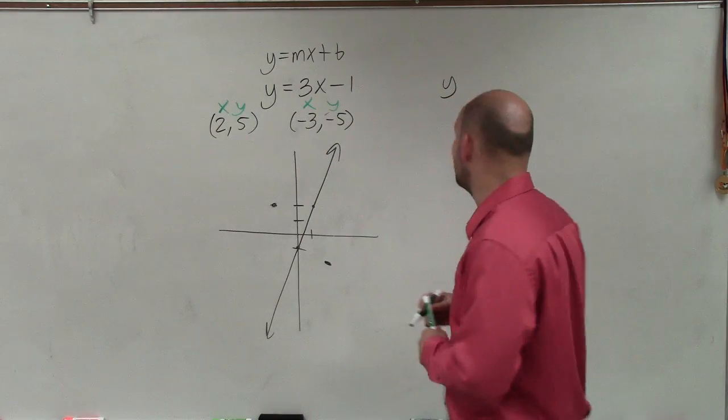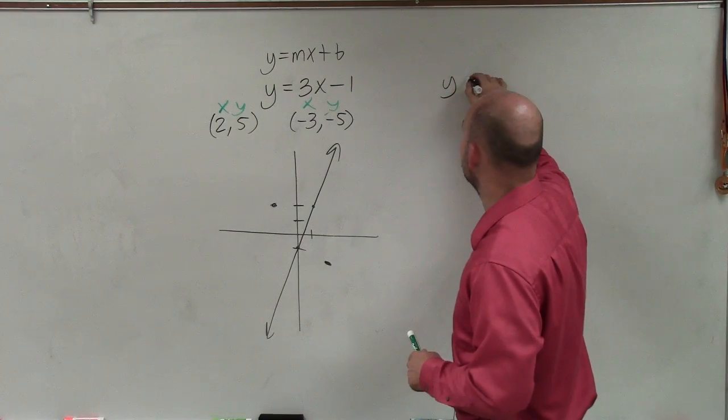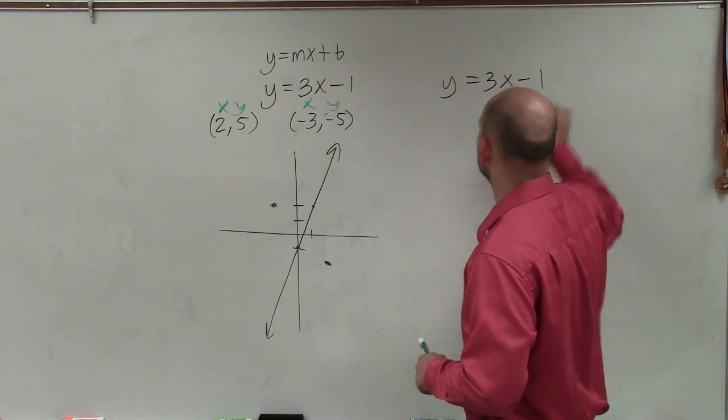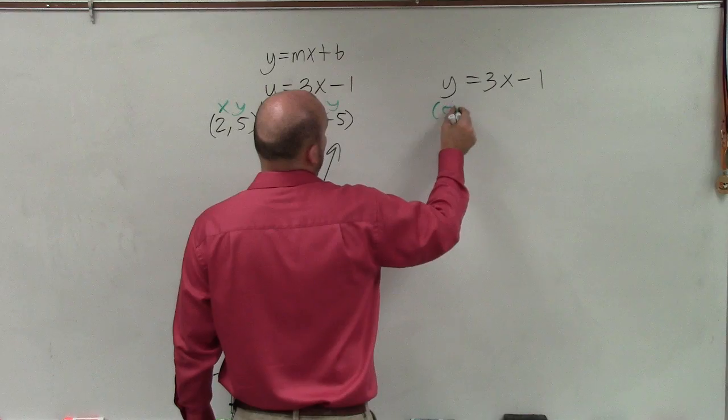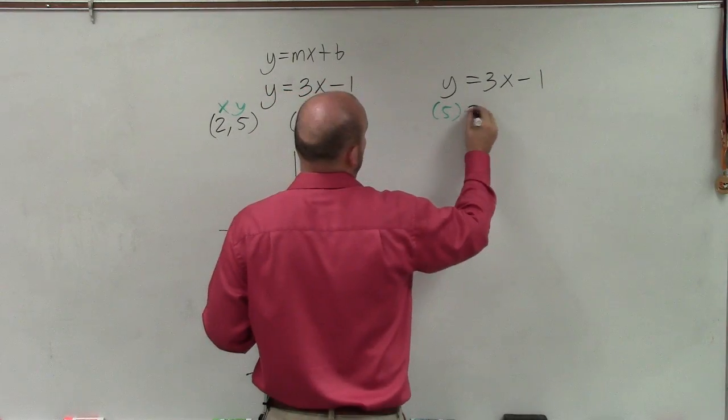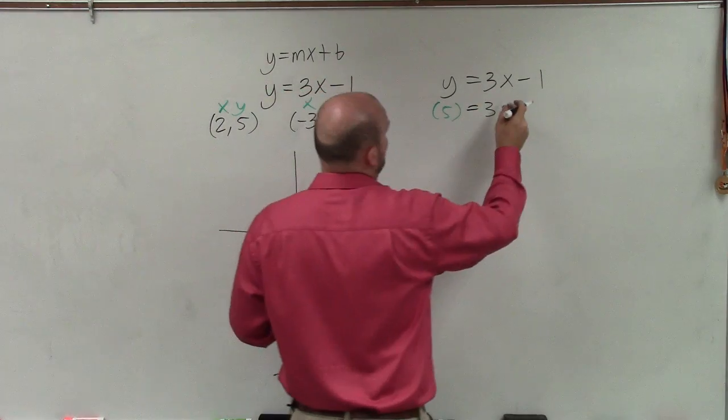Let's test our first point, 2 comma 5. So I have y equals 3x minus 1. All I'm simply going to do is plug in a 5 for y and plug in a 2 in for x.